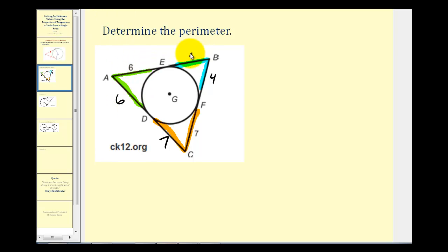Here we have twelve, eight, and fourteen. So twelve plus eight plus fourteen is going to give us four, carry the one. That will give us thirty-four units as the perimeter of this triangle.